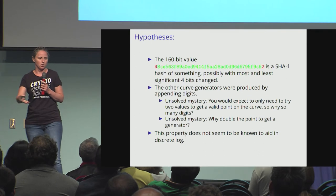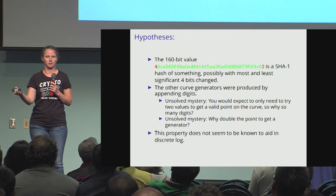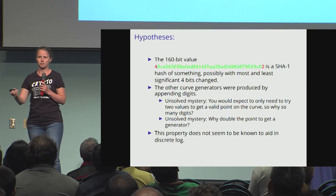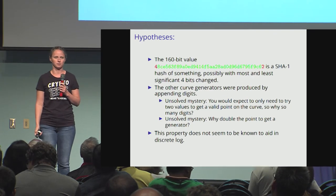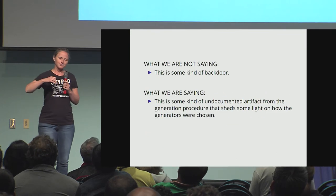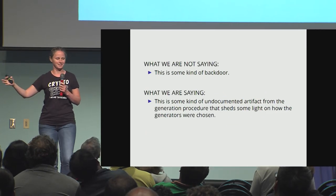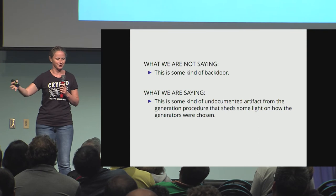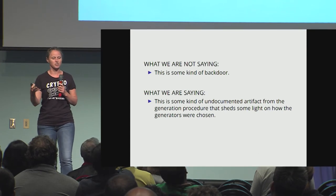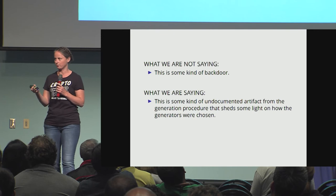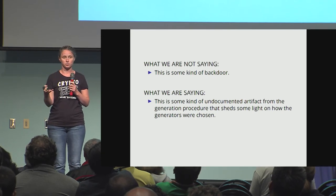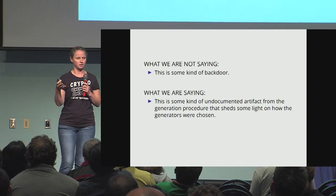This property doesn't seem to be known to aid in computing the elliptic curve discrete log in any way, so there doesn't seem to be any advantage to having this structure for either attackers or defenders. We have no idea if this is some kind of backdoor — it doesn't seem to be. But it does seem to be an undocumented artifact from the generation procedure that sheds some light on how the generators were chosen, which is not documented in the spec.